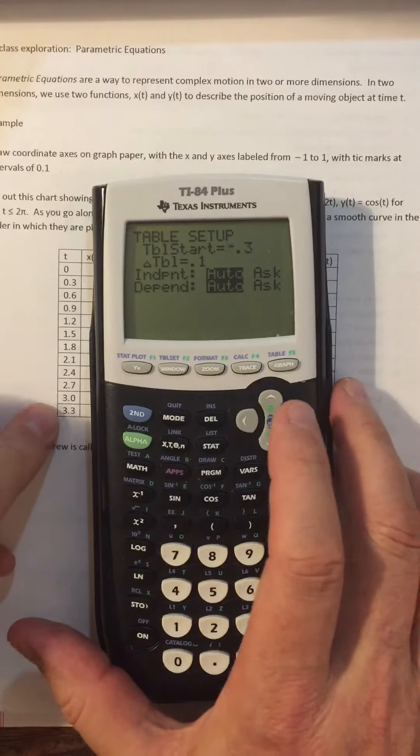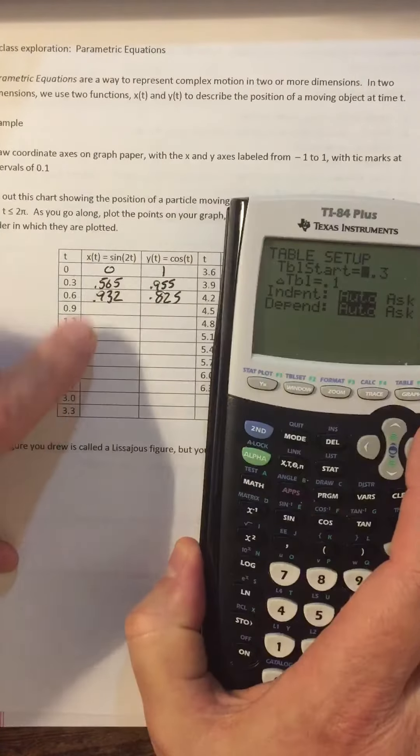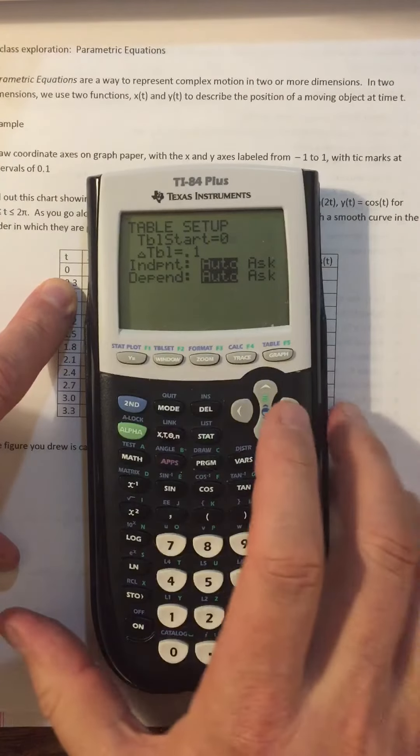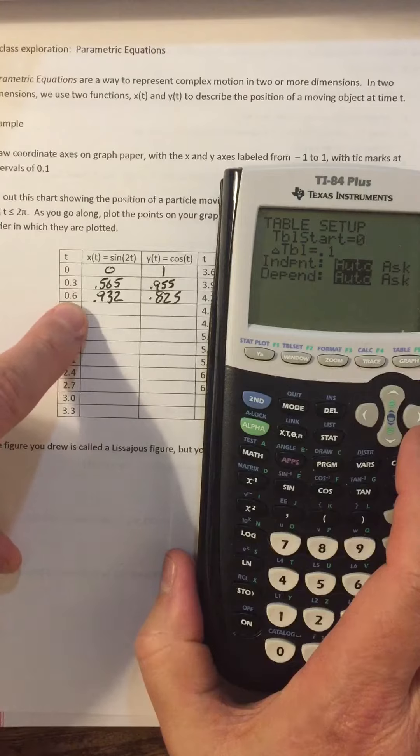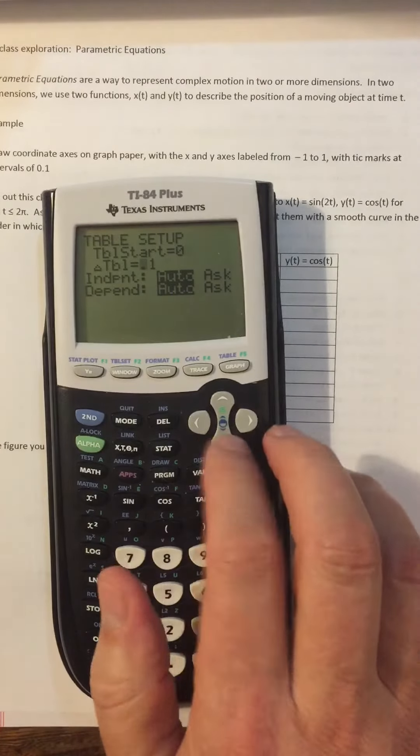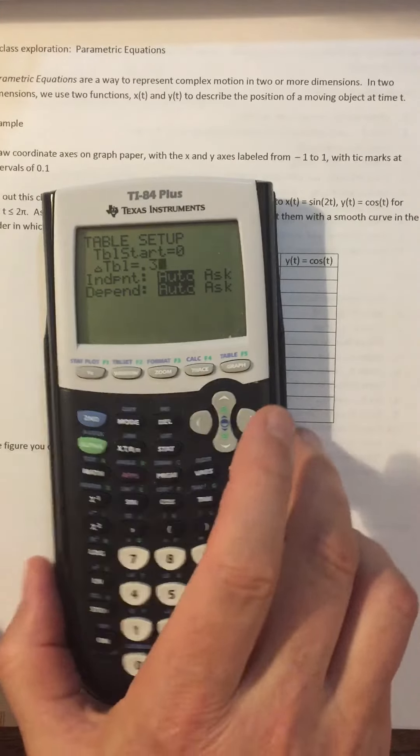So I want the table start to start at zero, and this is going to tell us where t is starting. And the t is going up by 0.3 every time. If it wasn't going up by a constant amount, I wouldn't be able to use the table feature unless I was extremely clever.